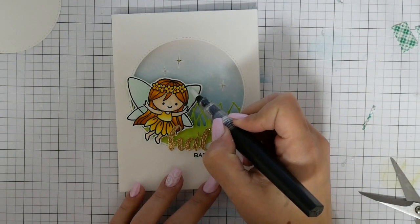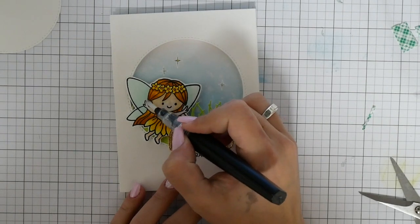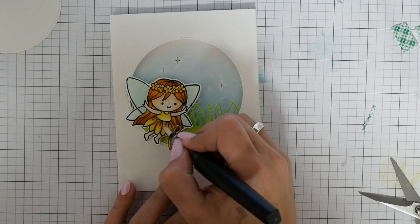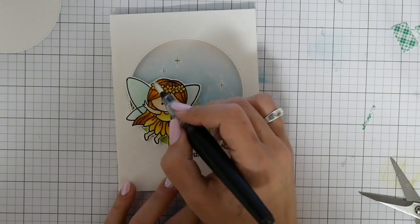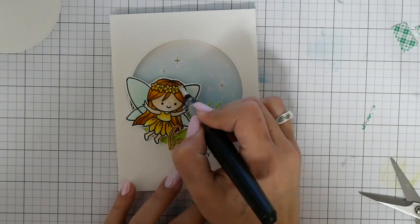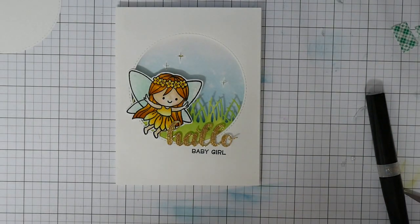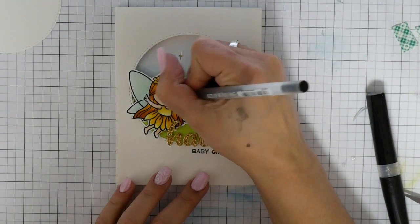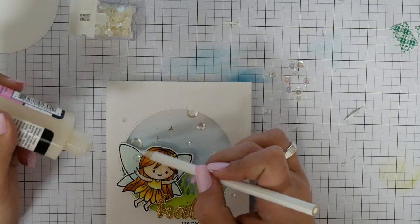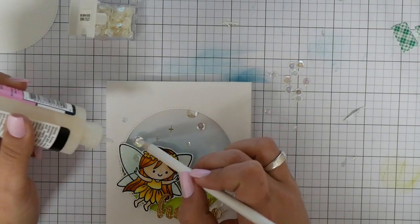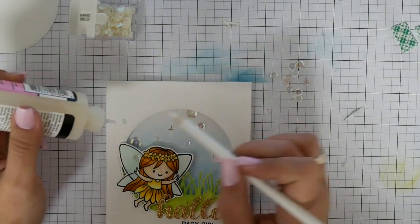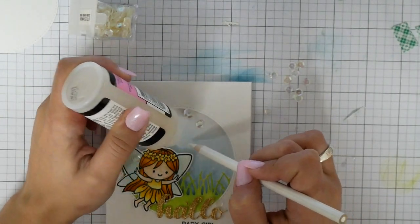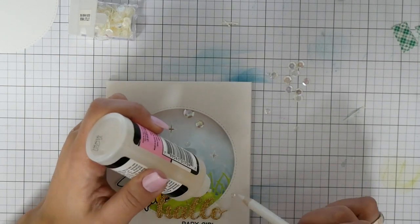Now I'm almost finished and I can make some finishing touches. I'm using my Spectrum Noir glitter pen, the clear overlay, to make shiny wings, a shiny hairband, and a shiny dress. I like it when fairies have a lot of glitter. I'm using here my black Jelly Roll pen to make the eyes pop more.